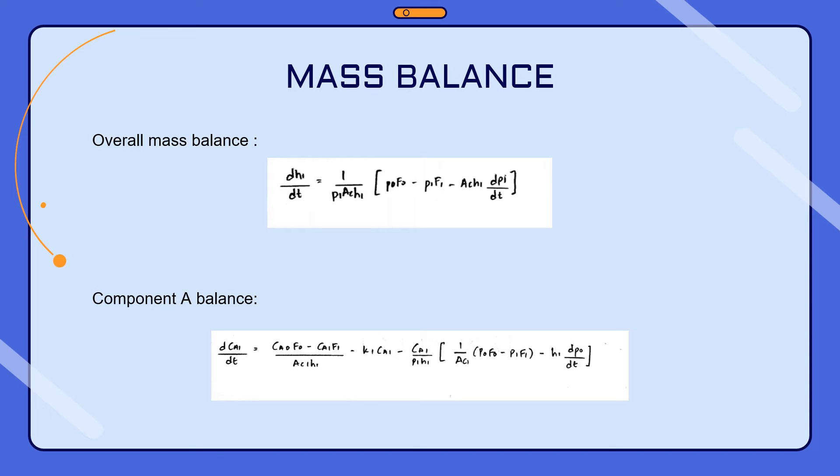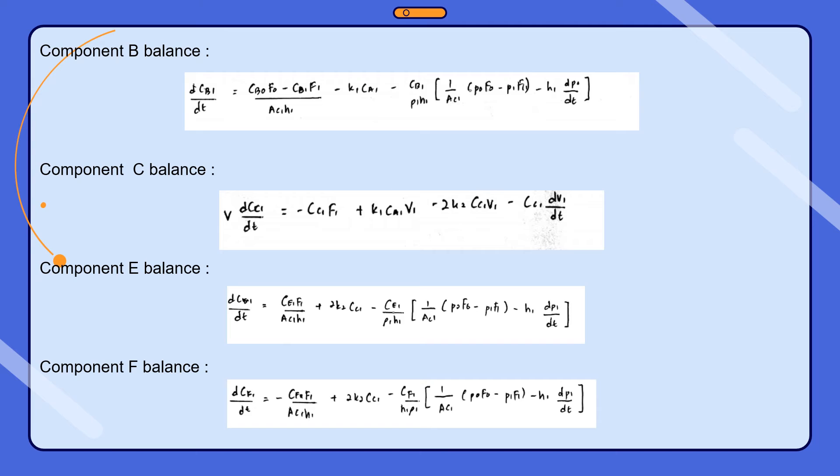In this equation, dt is the change in time, ρ1 is the density of the reaction mixture at the outlet of CSTR1, Ac is the cross-sectional area, and ρ0 is the density of the reaction mixture at the inlet of CSTR1. After conducting the overall mass balance, we then conduct a component balance for each component in the system.